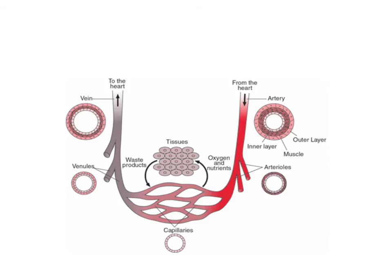As you have learned from the student notes, there are three types of blood vessels: the arteries, the veins, and the capillaries.